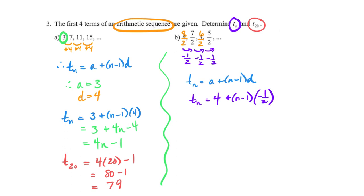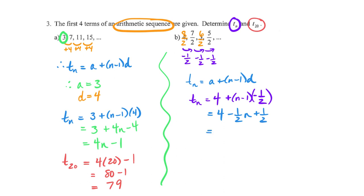My general term: term N equals A plus (N minus 1)D — I'm going to write it down every time to drill it in. Term N equals A plus (N minus 1)D. I sub in A equals 4 and D equals negative one half. You may now see why I always put brackets around my D. If I just write negative one half without brackets, it looks like a subtraction operation and I've lost my multiplication. Putting brackets around it maintains my multiplication.